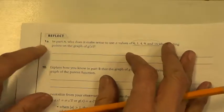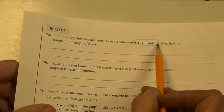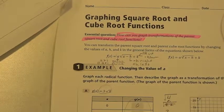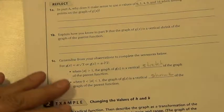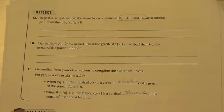Now in Part A, why does it make sense to use the values 0, 1, 4, 9, and 16? Part A was right up here. Why did it make sense to use these values? I call them nice numbers, but what do I mean by nice numbers for a square root?